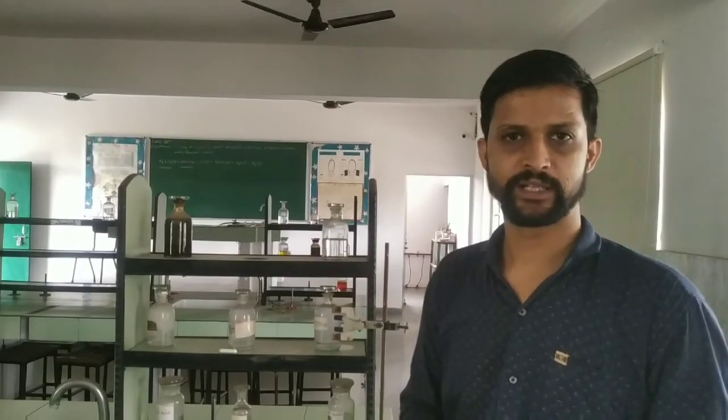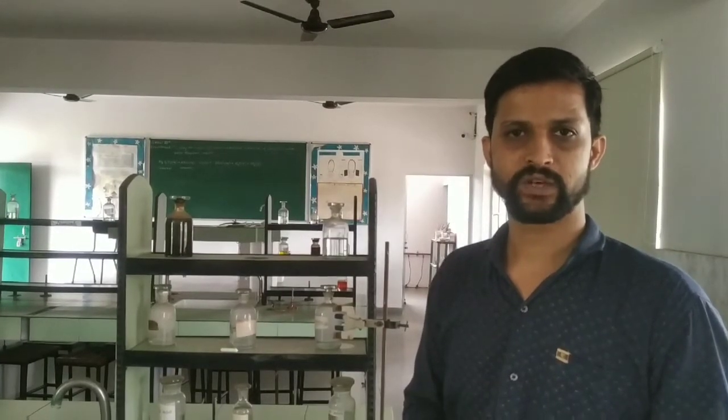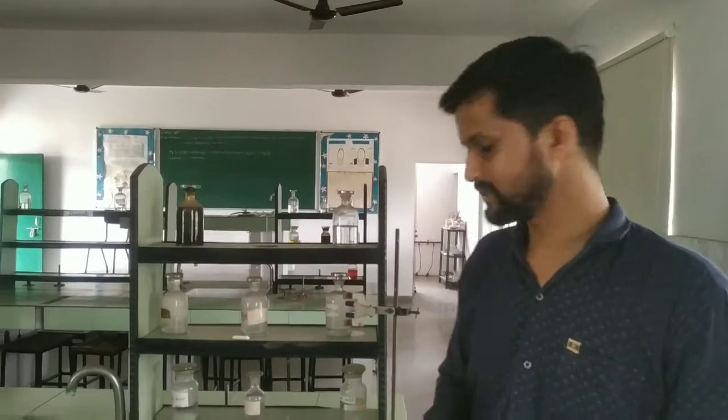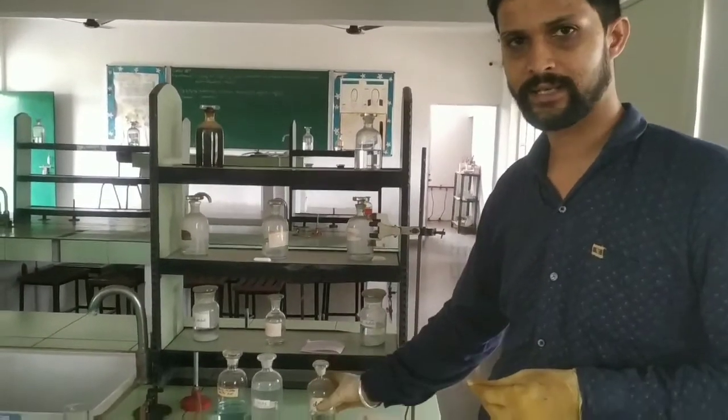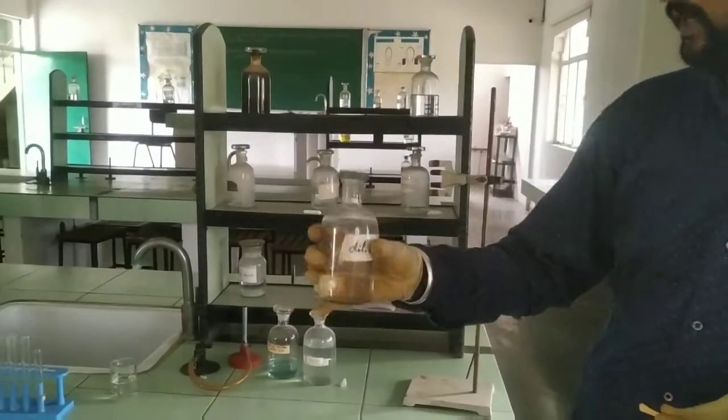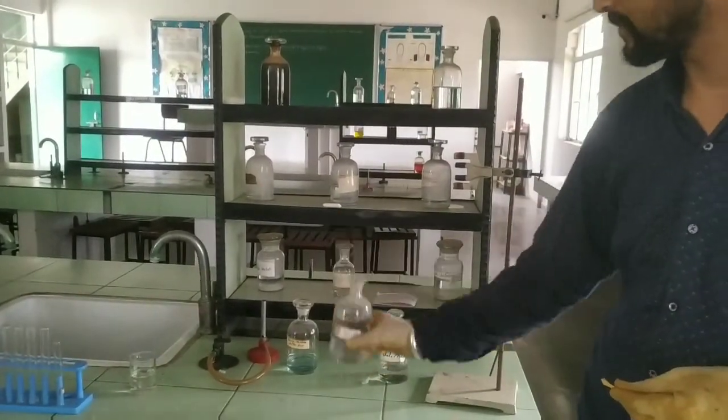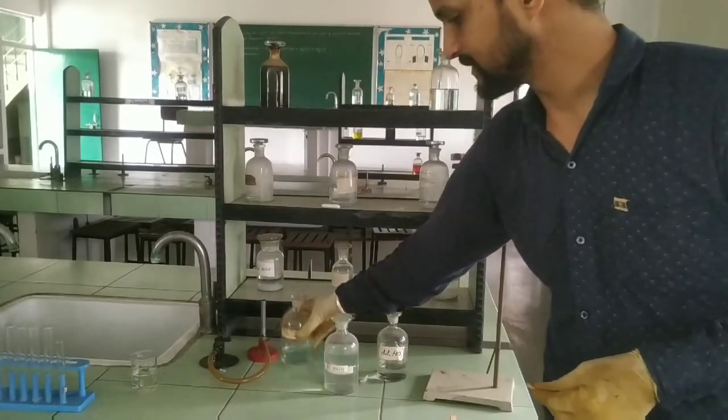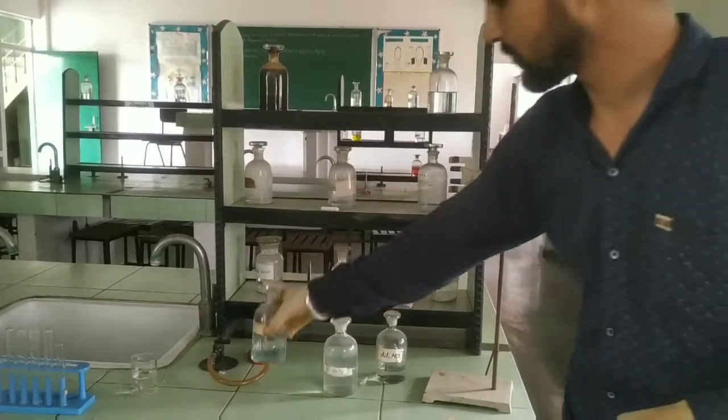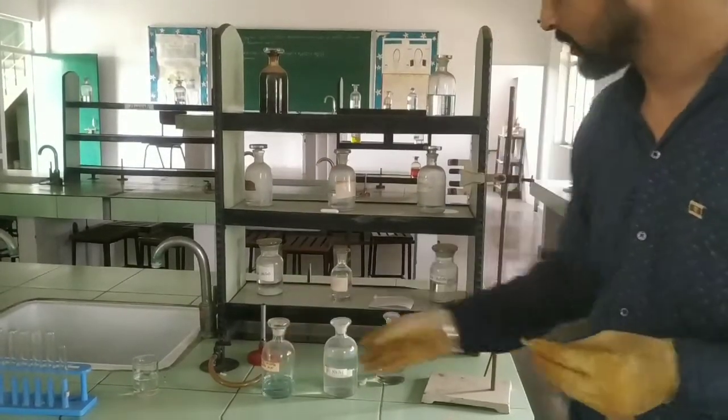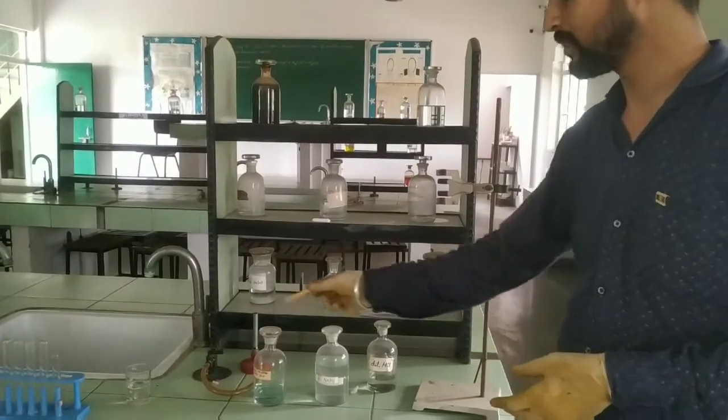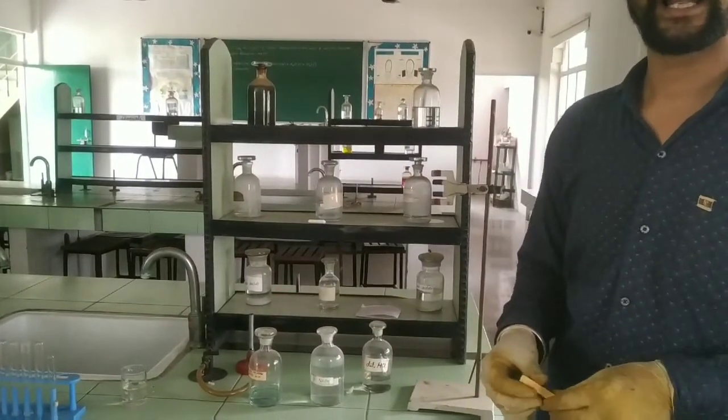Friends, we have the experiment to determine the pH of the following samples. The samples are dilute HCl, here this is the dilute HCl, dilute sodium hydroxide, dilute acetic acid, and water. So here we have to find the pH of all these samples.